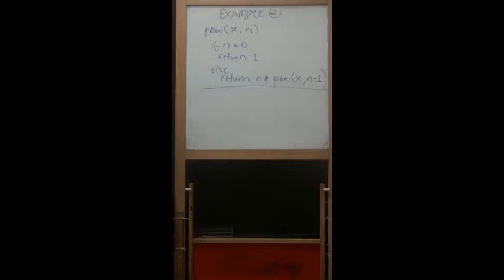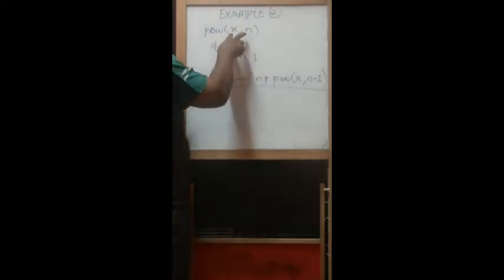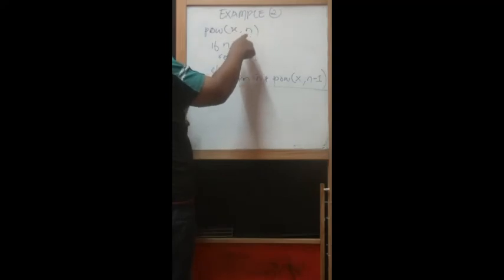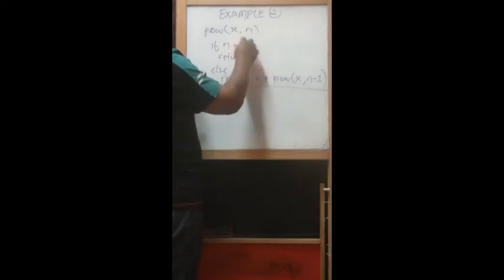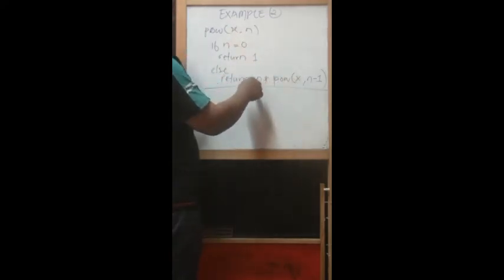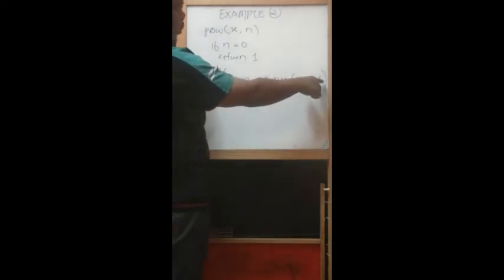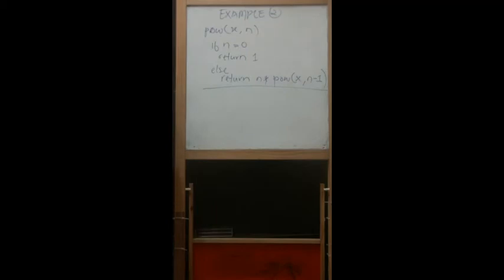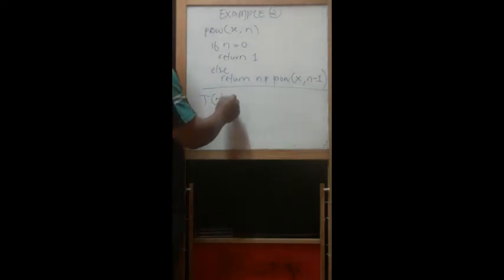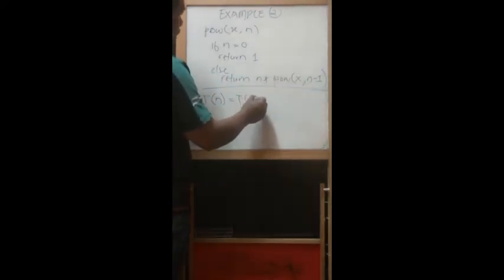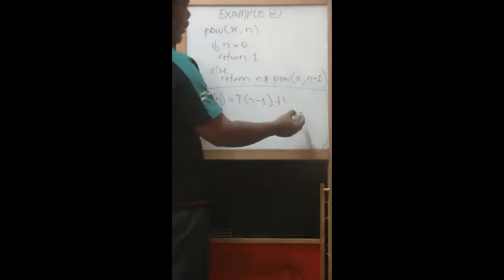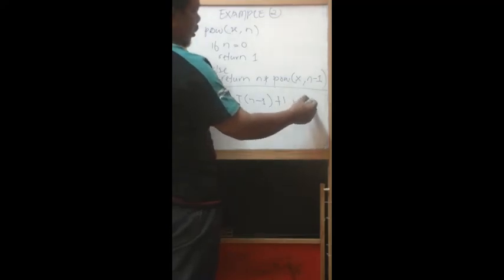For example number two, for the power algorithm, basically the same thing as the factorial just now. But the difference is when we look at the algorithm, we have two parameters x and n. Our main concern for the recursion is n, because this n minus one — so the recursion is n times power of n minus one. As a user, we establish the recurrence: T(n) = T(n-1) + 1, for n greater than one.